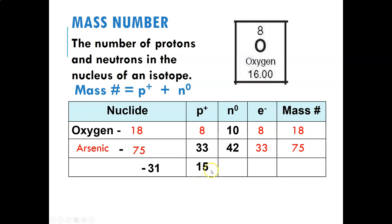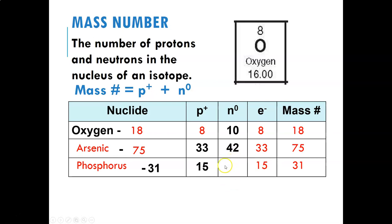Let's look at another example with 15 protons. I find 15 on my periodic table and find out that's phosphorus. The mass number was 31, so let's put mass number 31 in the box. There are 15 protons so it must be phosphorus. If it's neutral, 15 protons means 15 electrons. To find the neutrons, I take the total mass and subtract out the protons — 31 minus 15 — and I'm left with 16 neutrons.